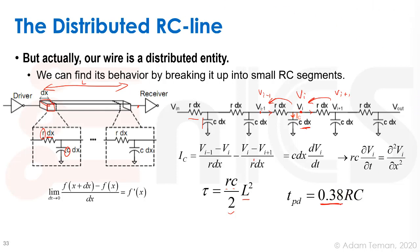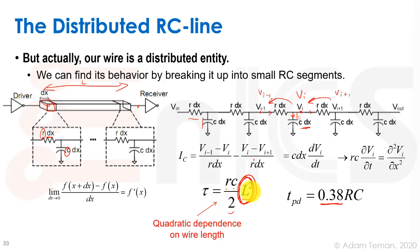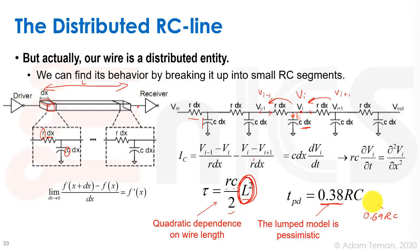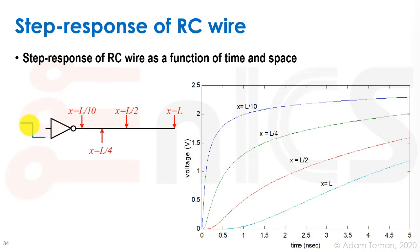This brings us to two important conclusions. First, the delay is proportional to L², meaning quadratic dependence on wire length — making wires longer dramatically increases delay, so we want short wires. Second, the lumped model at 0.69RC is very pessimistic compared to the actual distributed delay of 0.38RC. Looking at a step response of such a wire, we can observe the slow, wave-like rise at points further along the wire — a tenth, a quarter, half, and full length.